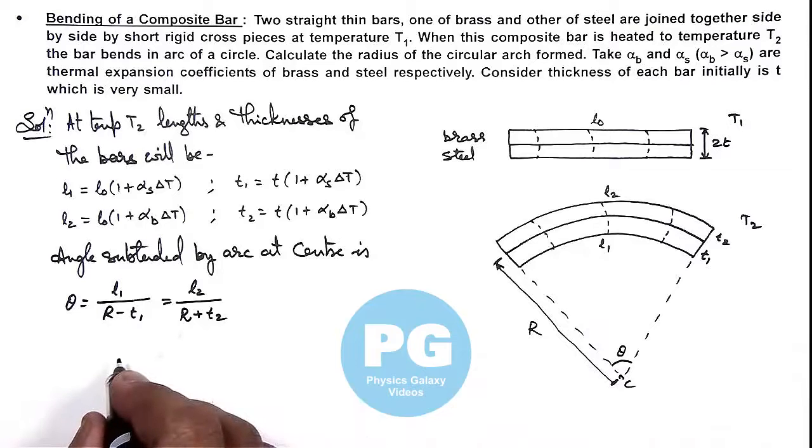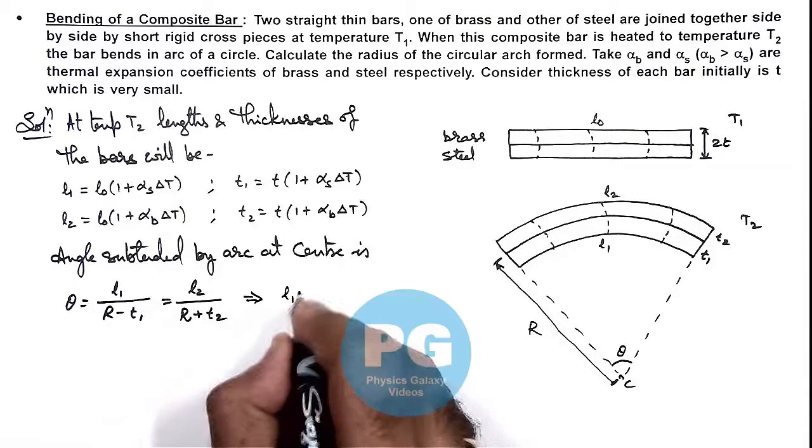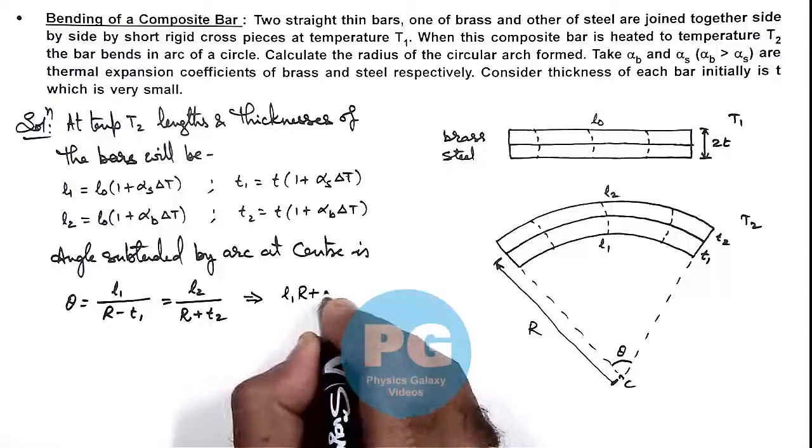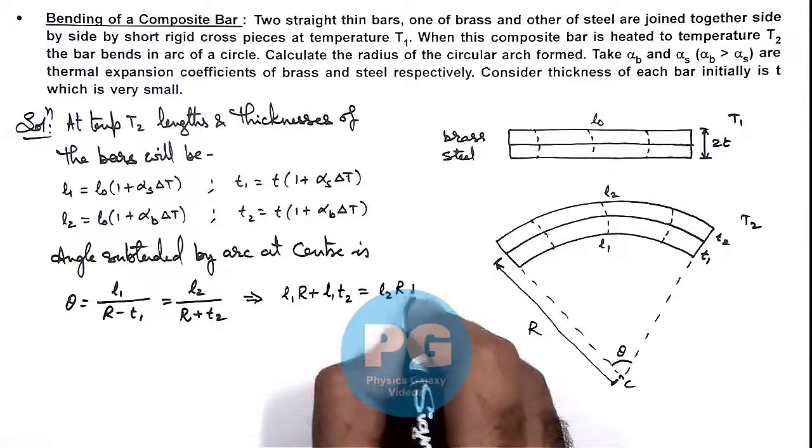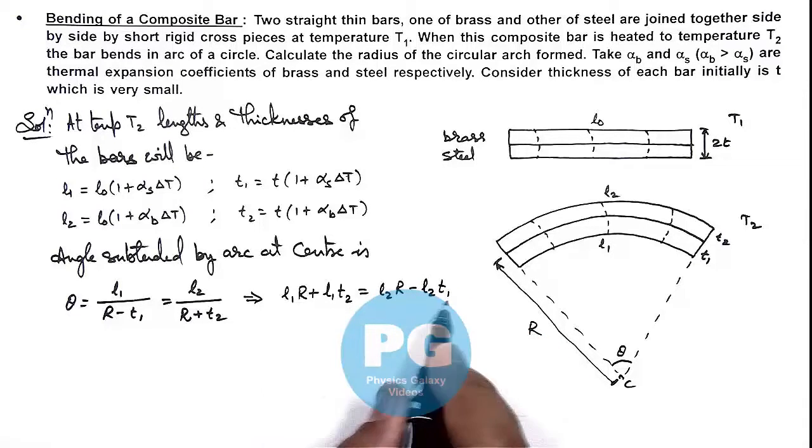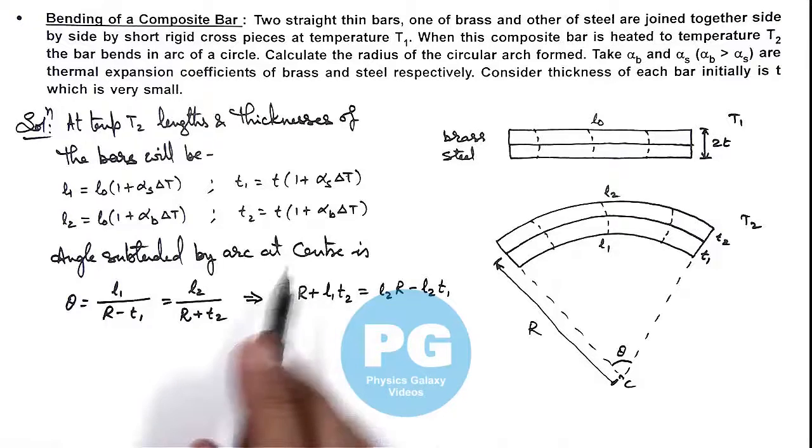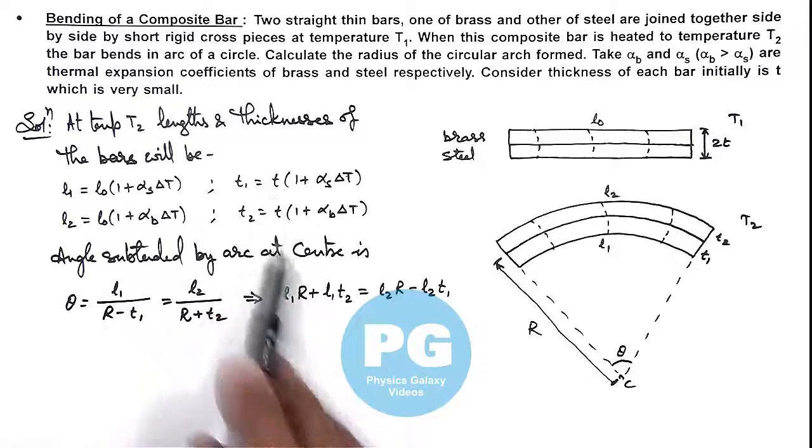If we simplify this relation, this will give us L1×R + L1×T2 = L2×R - L2×T1. On simplifying this value, you can substitute the value of L1 and L2, T1 and T2 over here.